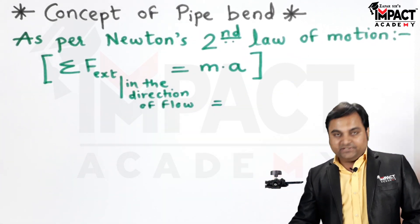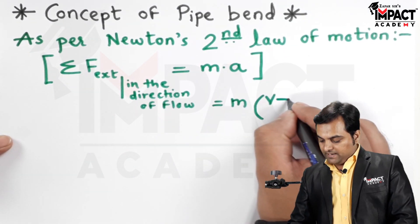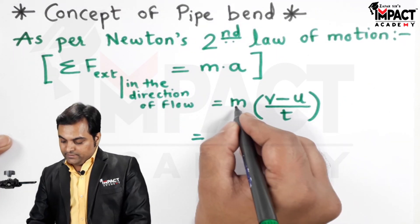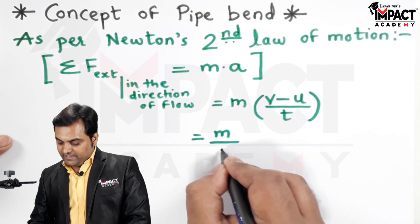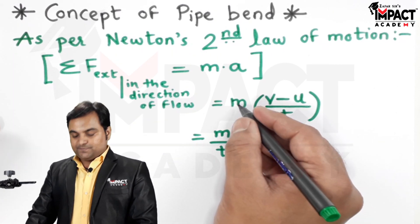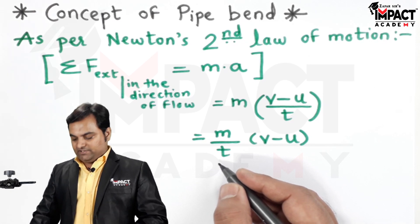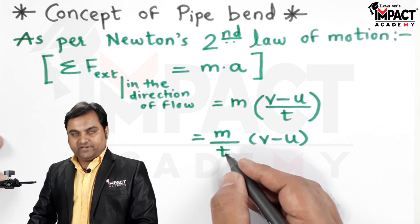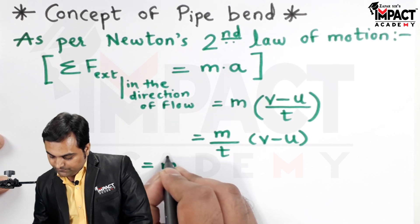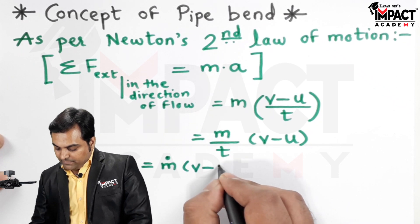This can be written as: acceleration is final velocity minus initial velocity divided by time. Then here we have M divided by T, which is (V minus U). Since this is mass in terms of kg and when dividing by time in seconds, it is kg per second, which is called the mass flow rate.